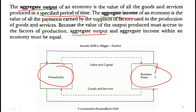Let's look at it very simplistically. We have households and we have business firms. Firms provide goods and services to households — people, families, etc. Households in turn provide labor and capital to firms. When firms sell goods and services to households, households pay the firm. So goods and services flow one way, and dollars, pounds, or whatever currency flow from households to businesses.